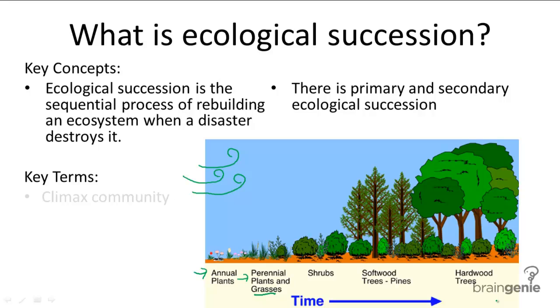The final community that emerges is called the climax community, and the different species that inhabit this community are determined by physical factors like temperature, soil type, and rainfall.